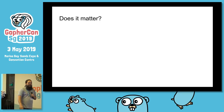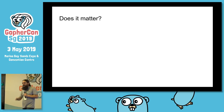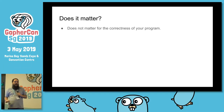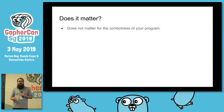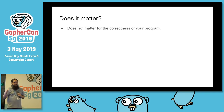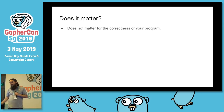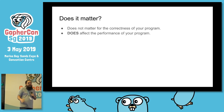Okay, but really — does it matter? It does not matter where your variable lives, as far as the correctness of your program is concerned. Go is going to make sure that your variable lives in the correct place — either the stack or the heap — so that your program does the correct thing.